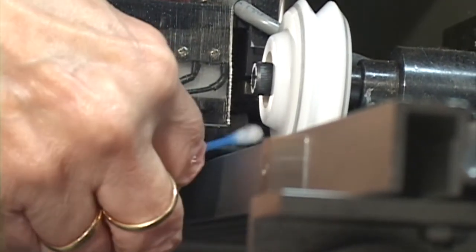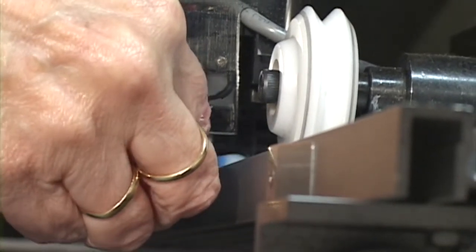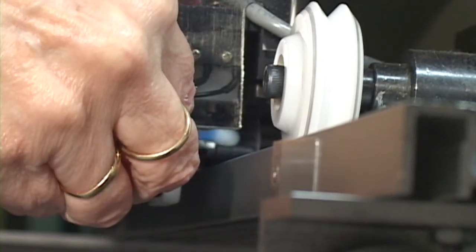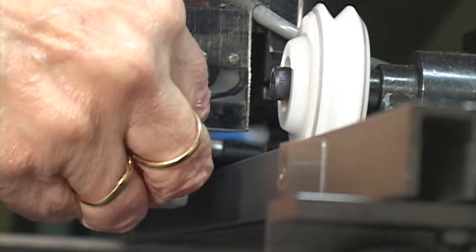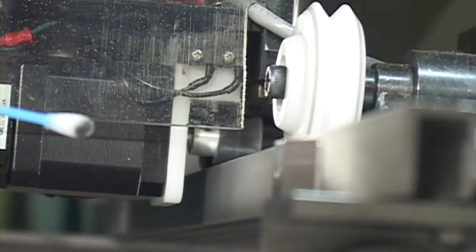Okay, I'm just holding the Q-tip against the wheel as it's spinning. I'm just moving it back and forth. Now I'm going to look at my Q-tip. Look at all that black.